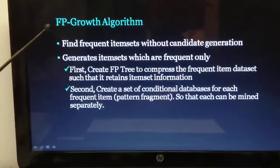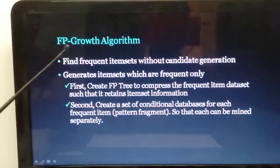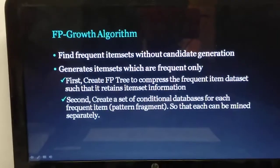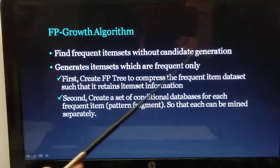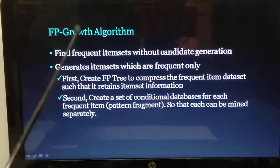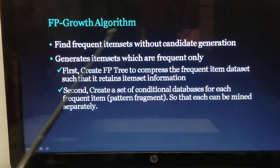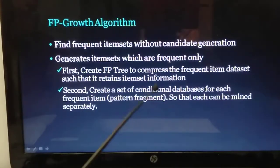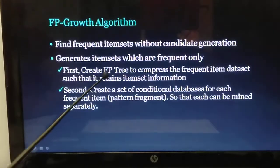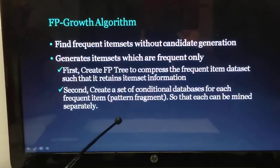We are going to continue with module 5. The next topic is the FP Growth algorithm — FP means Frequent Pattern Growth. In the case of the Apriori algorithm, there are two problems. First, we generate all the candidates before we decide whether a candidate is to be kept or pruned. In FP Growth, we do not generate all candidates. Instead, we keep all the information in the database as an FP tree and then generate the patterns from that FP tree.